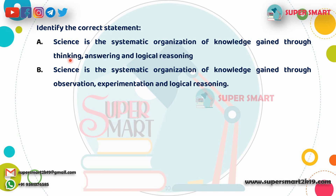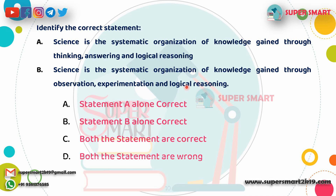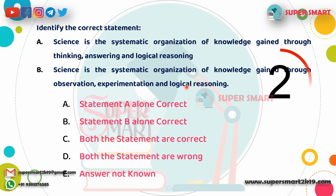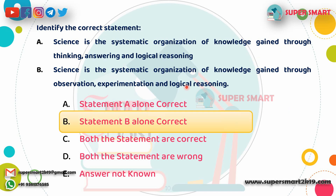Next question: Which statement about science is correct? Science is the systematic organization of knowledge. We can gain scientific knowledge through logical reasoning, observation, and experiment — and the answer is observation and experiment.